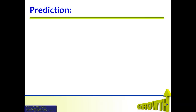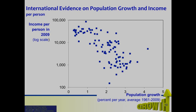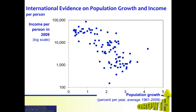So now we make the prediction of the Solow model. The Solow model predicts that countries with higher population growth rates will have lower levels of capital and income per worker in the long run. This makes clear what the model attributes to the causes of long-term growth: increased savings and lower population growth. And are the data consistent with this prediction? A scatter plot of data from 96 countries shows that countries with high rates of population growth tend to have low levels of income per person, just as the Solow model predicts. According to the Solow model, a poor country can raise its standard of living by increasing national savings — perhaps by reducing its budget deficit — or by reducing population growth.